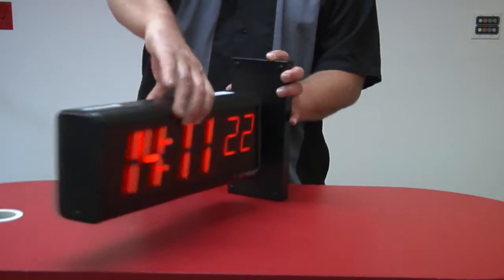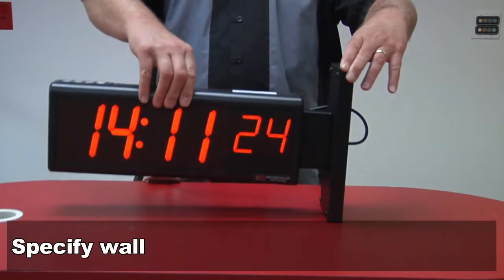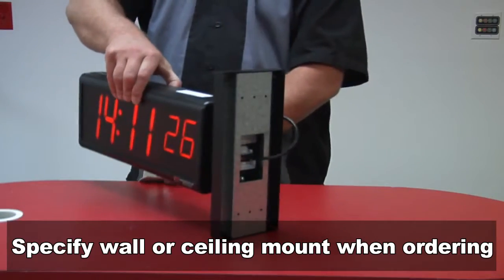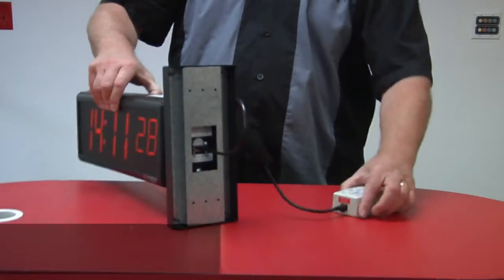The frame of the clock is made of black polycarbonate. The clock comes with a metal mounting bracket that can be ordered as a wall or ceiling mount.